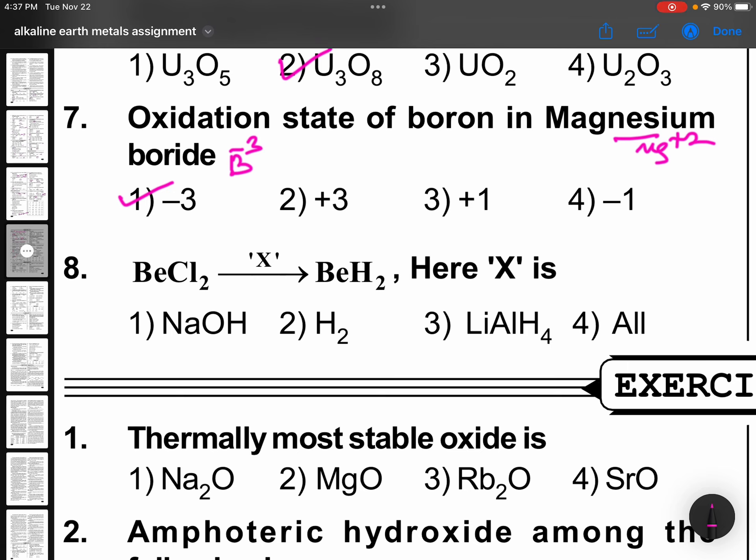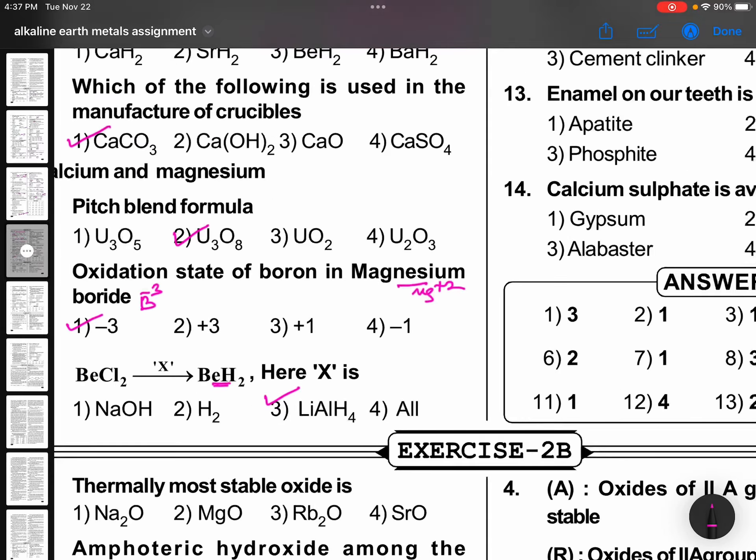BeCl2 gives rise to BeH2. So, here we need a reducing agent. The best reducing agent for this is lithium aluminum hydride.